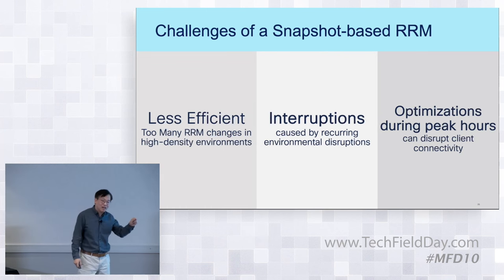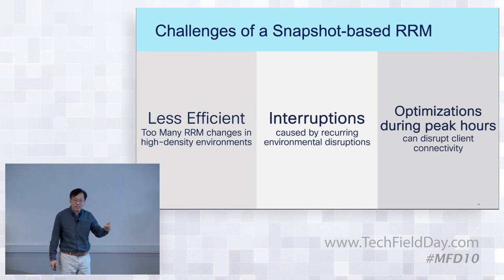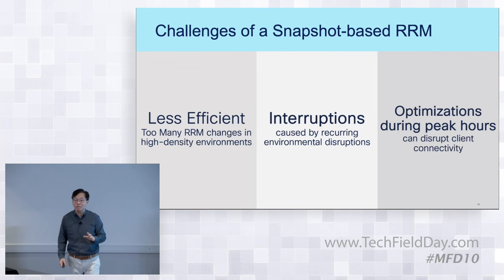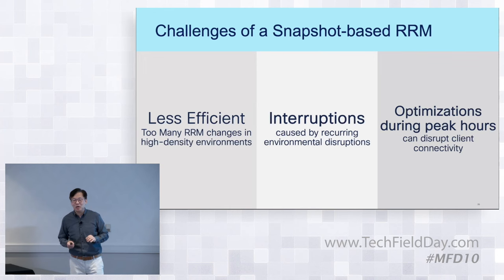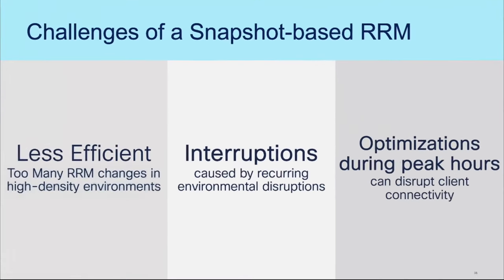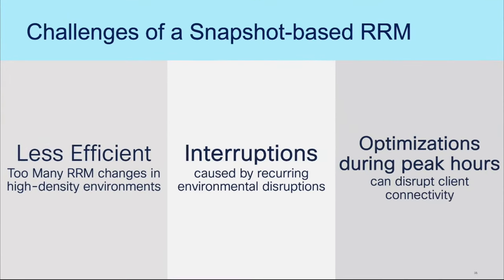Traditional RRM only remembers the last 15 to 20 minutes — it keeps forgetting what happened in the past. Have you seen the movie Memento? That's pretty much what most traditional RF management is like. It's Memento — they keep forgetting, so they keep repeating the same mistakes. There's a hole in the wall, a hole on the road, but they keep falling into it.